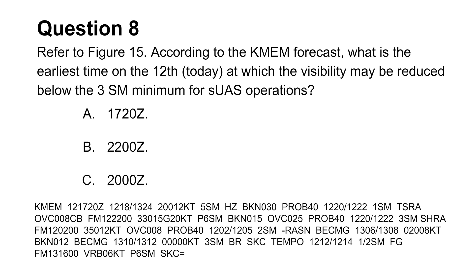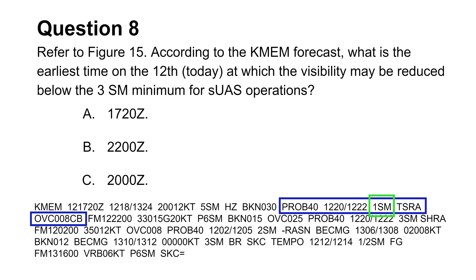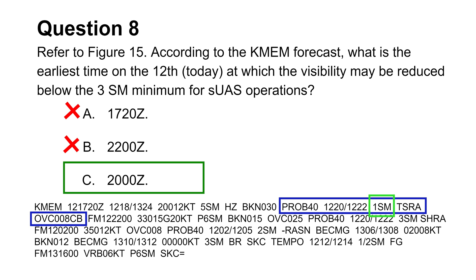The eighth question wants you to identify the earliest time on the 12th day of the month in the TAF report when visibility will be below 3 statute miles. Begin scanning each valid period block sequentially, focusing on visibility numbers. In the first time block, visibility is 5 statute miles. The next time block starts at 20:00 Zulu, and this is the first time visibility goes below 3 statute miles — it will actually be 1 statute mile. This makes choice C the answer.